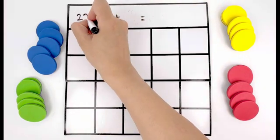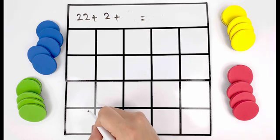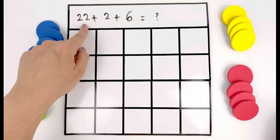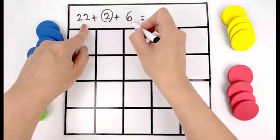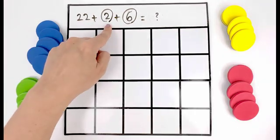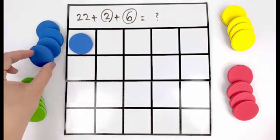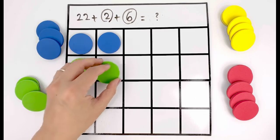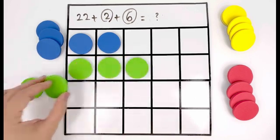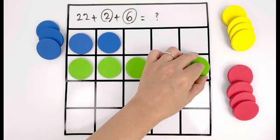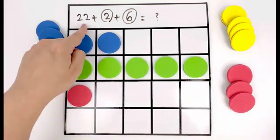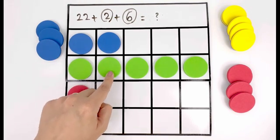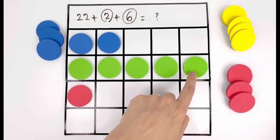How much is twenty-two plus two plus six? Let's keep number twenty-two and count two circles and six circles. First we are starting with two, one, two. Then number six, one, two, three, four, five, six. So it's twenty-two, twenty-three, twenty-four, twenty-five, twenty-six, twenty-seven, twenty-eight, twenty-nine, thirty.